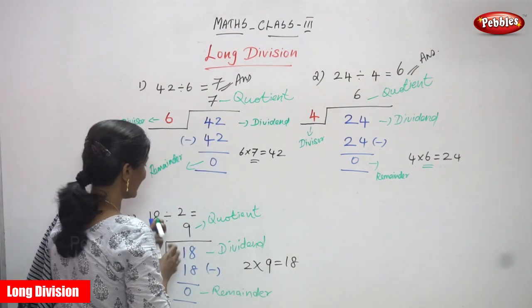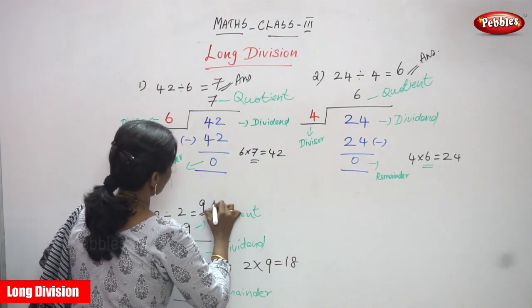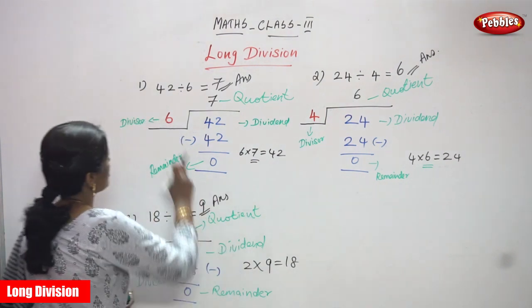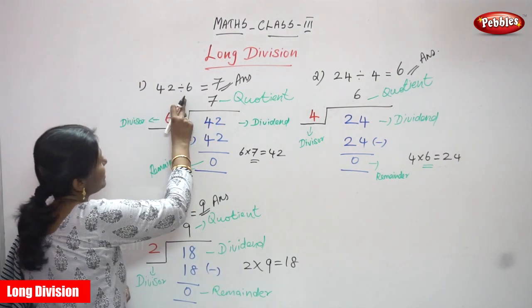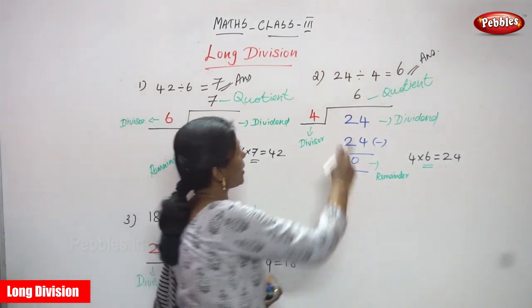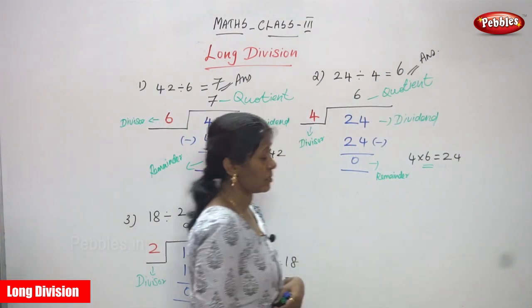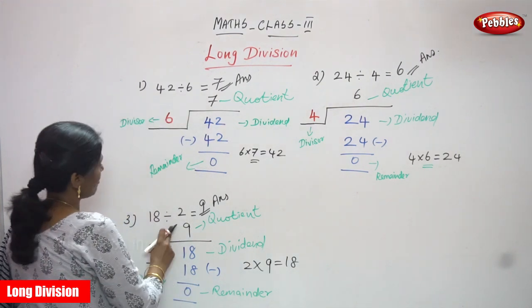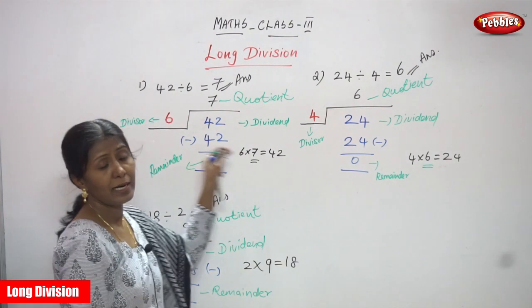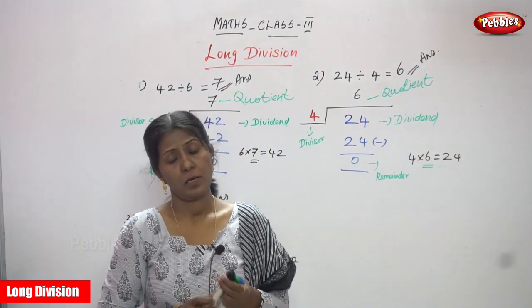So 18 is divided by 2, the answer is 9. 9 is the right answer for the question. First question: 42 is divided by 6, the answer is 7. Second question: 24 is divided by 4, the answer is 6. Third question: 18 is divided by 2, the answer is 9. I think you understand long division very clearly. Thank you.